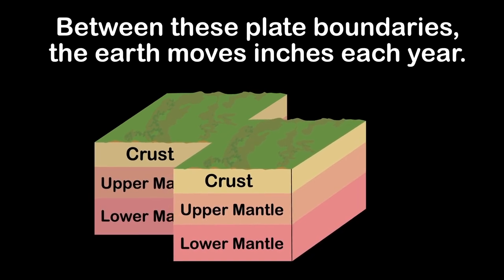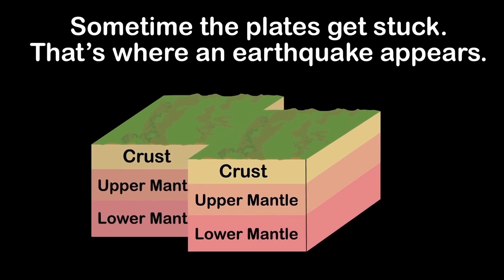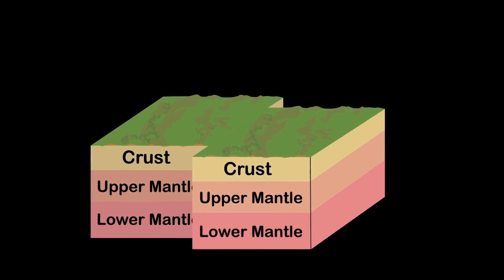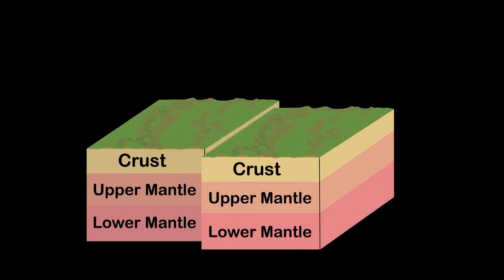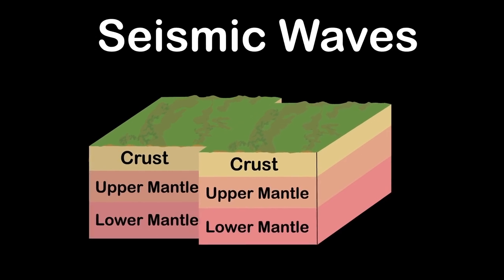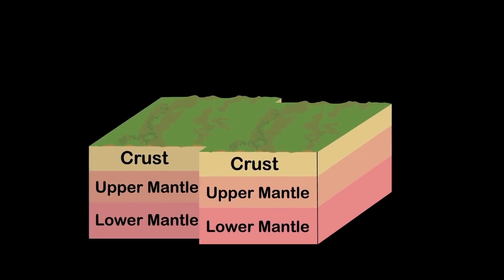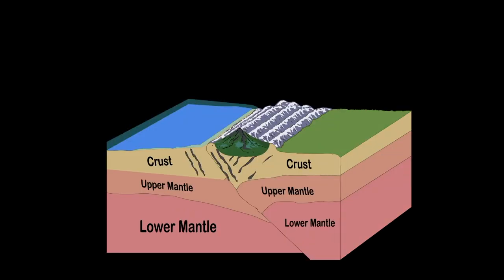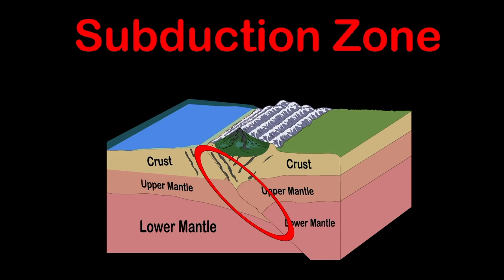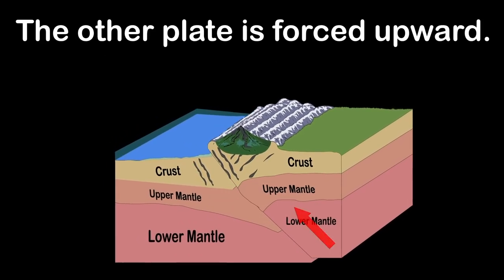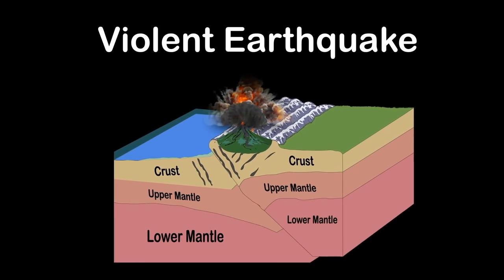Between plate boundaries the earth moves inches each year, but sometimes the plates get stuck — that's where an earthquake appears. When pressure builds up from being stuck, the rock breaks releasing energy causing seismic waves. These seismic waves shake the ground — that is an earthquake. The most violent quakes happen in subduction zones, where one tectonic plate is shoved beneath another. One plate is forced down into the earth's mantle and the other plate is forced upwards — that's where the violent quake appears.